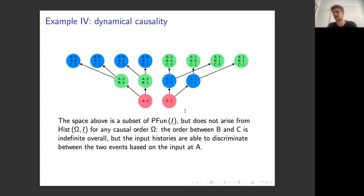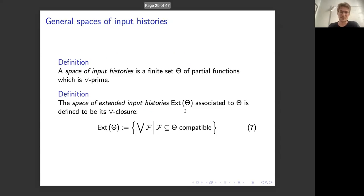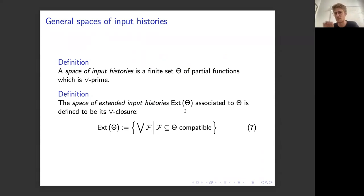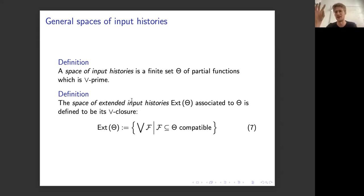We provide axiomatic descriptions of nice spaces of histories corresponding to some causal assumptions. The first property is join primality: the histories you choose are prime — you cannot form another history by joining two compatible histories unless one is totally contained in the other. This ensures no spurious histories are generated by combination.